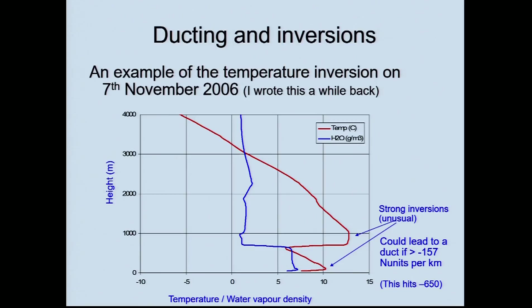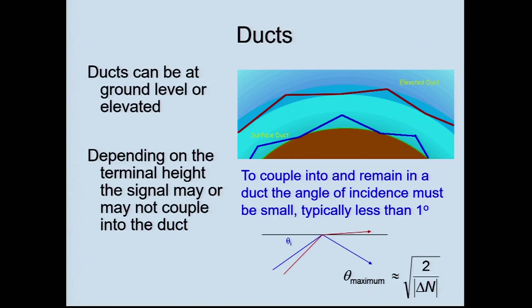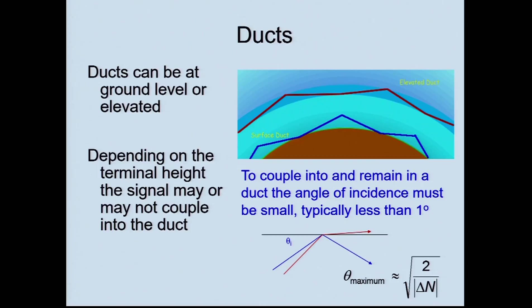The red line on this graph shows what the temperature was doing with height as measured by a radiosonde on the 7th of November. Those who remember that far back — we had a mega lift on that particular weekend, which makes it doubly annoying. A duct is the case where the refractive index is falling by more than 157 N units per kilometre going upwards, which means energy is getting trapped — bent back down to the earth. To get DX, a signal might or might not couple into that duct. It very much depends on how deep the duct is and how you're located relative to it.